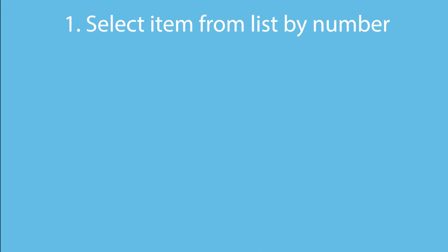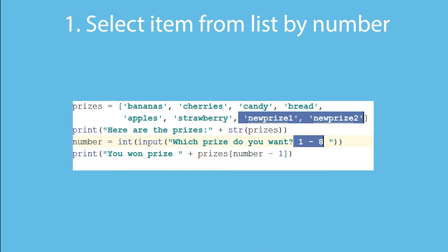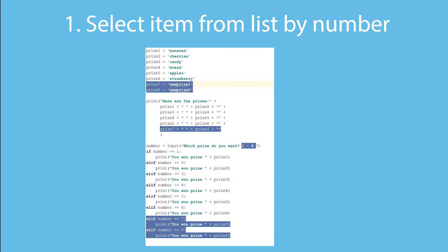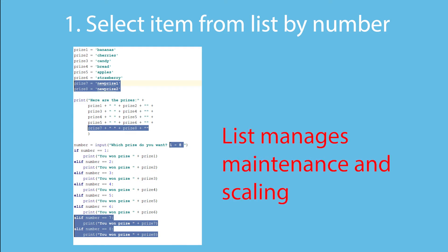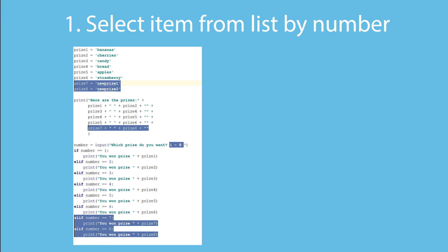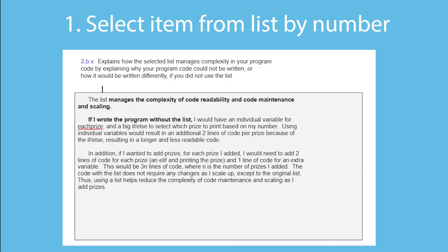The other benefit comes if I want to add prizes. With the list, mostly the only change I need to make is to change the list. If I use individual variables instead, adding two prizes would need four extra lines to the if-else. If I were to add one million prizes, the if-else would be about two million lines longer. So a list scales to big numbers much more nicely, managing the complexity of code maintenance and scaling — that is, the complexity of the code growing.